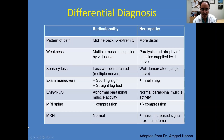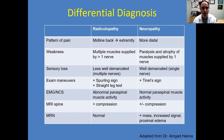This is a slide adopted from a talk by Dr. Amgad Hanna at a recent course. It's very helpful for thinking about how to differentiate between radiculopathy or a spine problem, and neuropathy or a peripheral nerve problem.